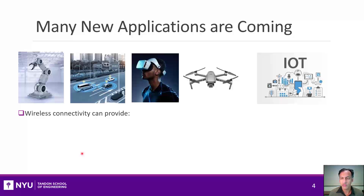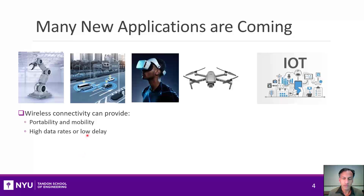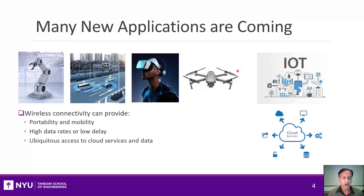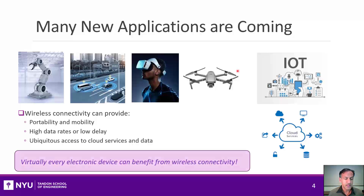All of these devices can benefit from wireless connectivity in a number of distinct ways. It can make devices portable and mobile, and give them access to data ubiquitously on the fly. Some applications require very high data rates — like virtual reality — or very fast connections for real-time control, such as in robotics and flying drones. Wireless can also give ubiquitous access to cloud services and data, which become vital for all sorts of processing, particularly with the growth of AI. Virtually every electronic device can benefit in some way from wireless connectivity.